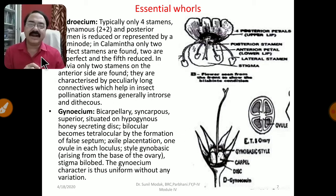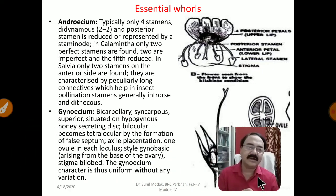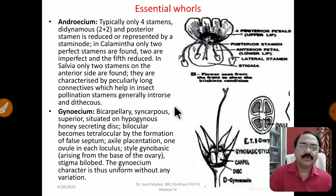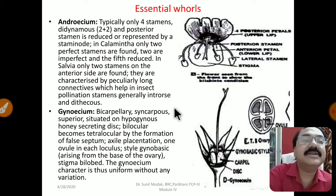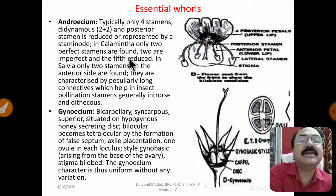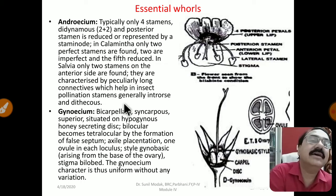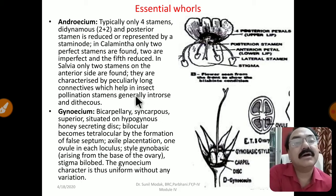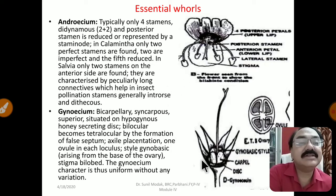Regarding the androecium: there are typically four stamens in a didynamous condition — two-plus-two arrangement — and the posterior stamen is reduced or represented by a staminode. In Calamintha, only two perfect stamens are found, two are imperfect. In Salvia, only two stamens on the anterior side are found, characterized by peculiarly long connectives which help in insect pollination. Stamens are generally introrse and dithecous — introrse means opening inside.